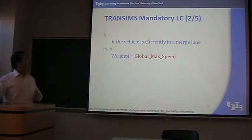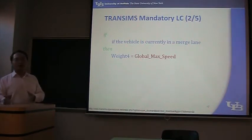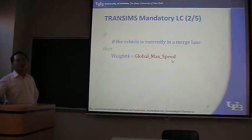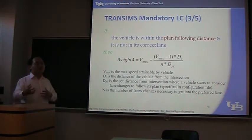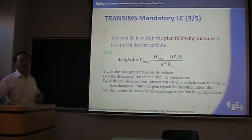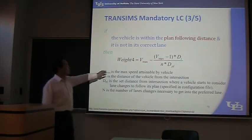There are four situations for mandatory lane change. The first case is if the vehicle is currently in a merge lane, meaning this lane is going to end very soon. Then Weight 4 is equal to Global Max Speed 5. So we add 5 to Weight 1 to make the lane change more possible. In the second case, if the vehicle is already within the planned following distance and it's not in its correct lane, then Weight 4 will be slightly lower than the merge lane case, but still positive.